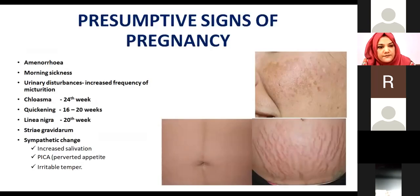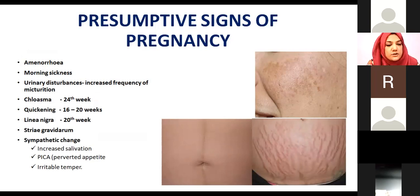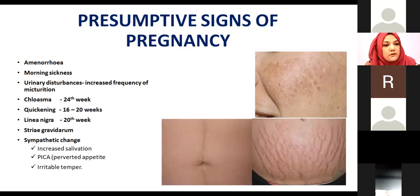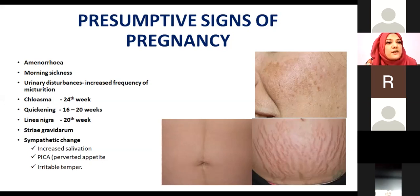The first presumptive sign is amenorrhea — the cessation of the menstrual cycle. It is the first and foremost important sign to consider for pregnancy. However, amenorrhea can also occur if a female is suffering from any hormonal imbalance, if she is under stress, or if she is nearing her menopausal time, so it is not a conclusive sign.